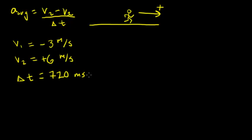So what we'll do there is rewrite this as 0.720 seconds. That's the conversion of milliseconds to seconds because there are 1,000 milliseconds in one second.